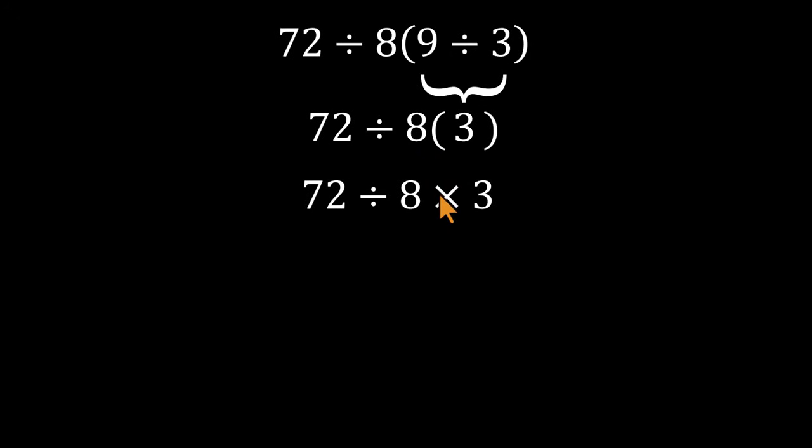And this is where the shortcut kicks in. They grab the 8 and the 3, multiply them together. 8 times 3 equals 24. Now it looks like 72 divided by 24, which gives 3.